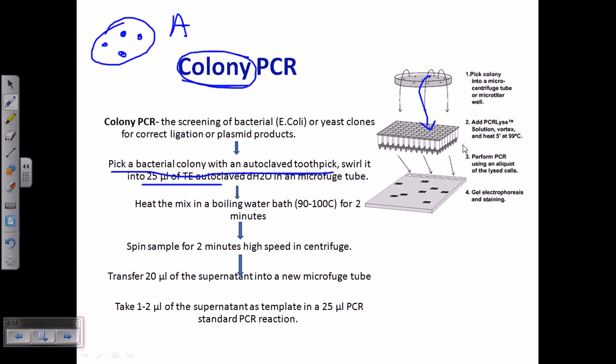What is the necessity of heating and spinning? Heating the bacterial colony at 90 to 100 degrees Celsius will ensure the crack of the cells. The cell membrane will be disrupted and all the genetic materials will come out.